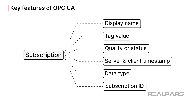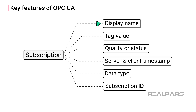Each configured OPC UA subscription has properties that request data, such as display name — which is the data object or tag — tag value, quality or status, timestamp of the OPC UA server and client, data type, and subscription ID.